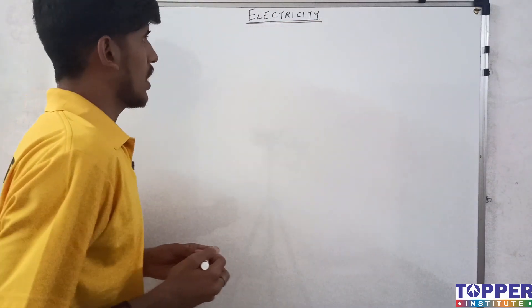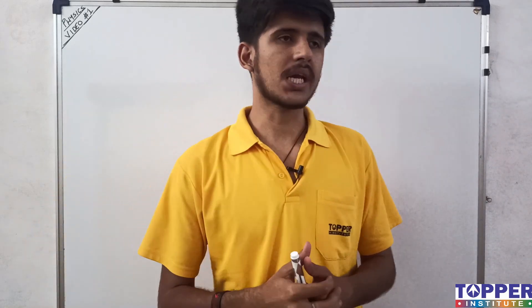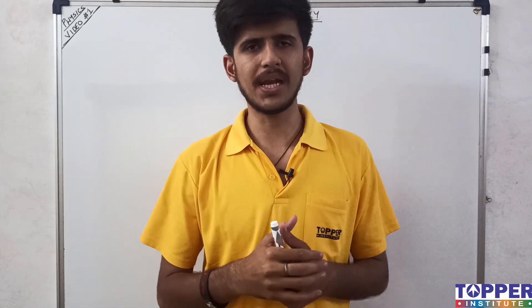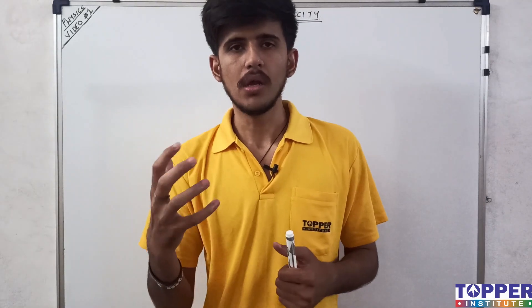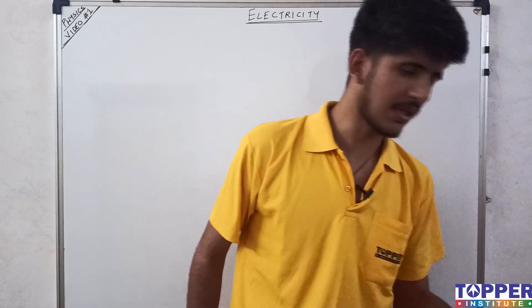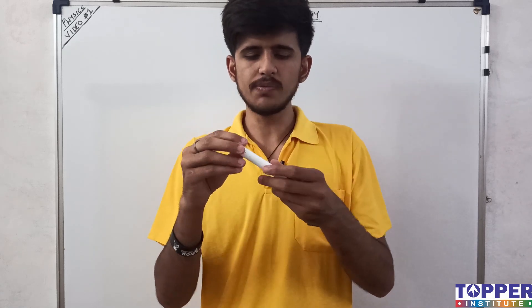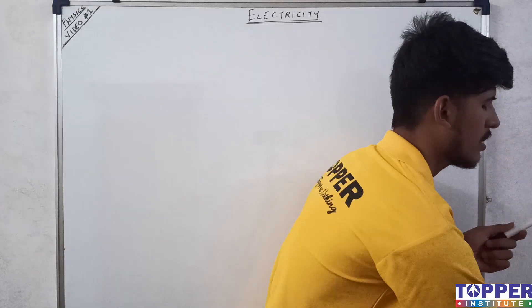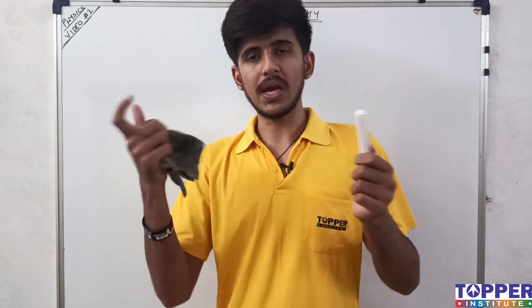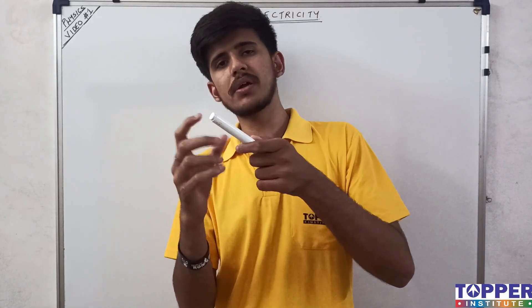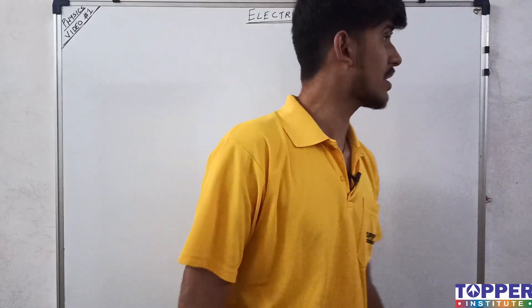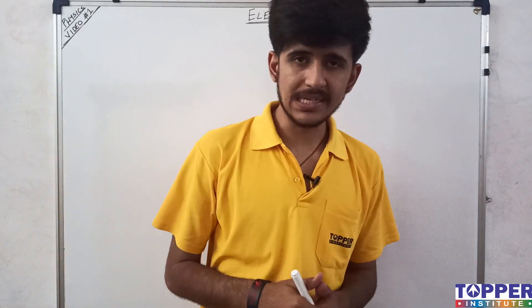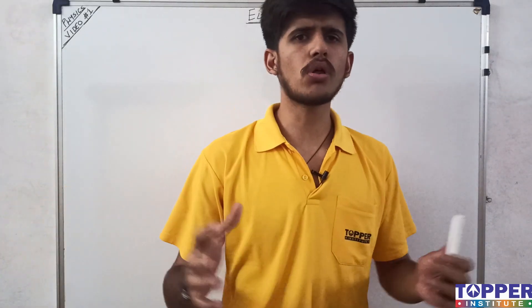The chapter is called Electricity. Let's first understand where this word 'electricity' came from. There was a Greek philosopher, Thales of Miletus, who coined the term. It comes from the Greek word 'electron', which means amber. Amber is a plastic-like material. When amber is rubbed against a surface like silk, a spark is generated — that's where the concept of electricity originated, and from 'electron' came the word 'electricity'.